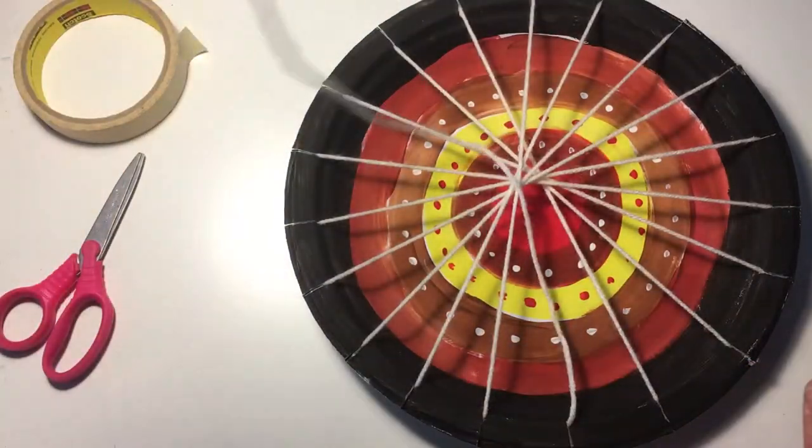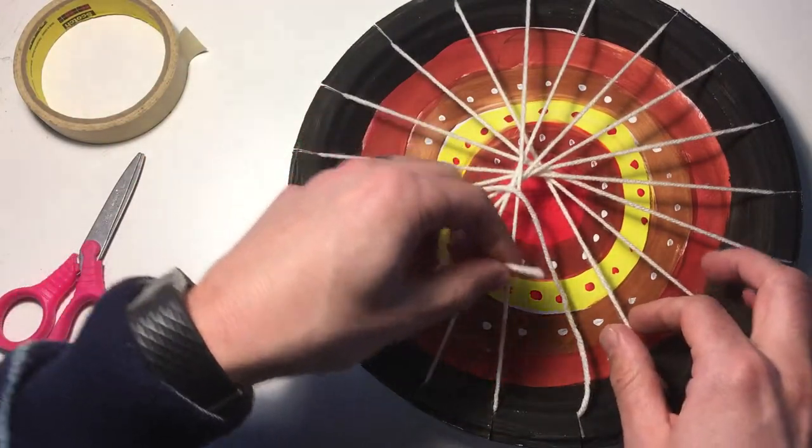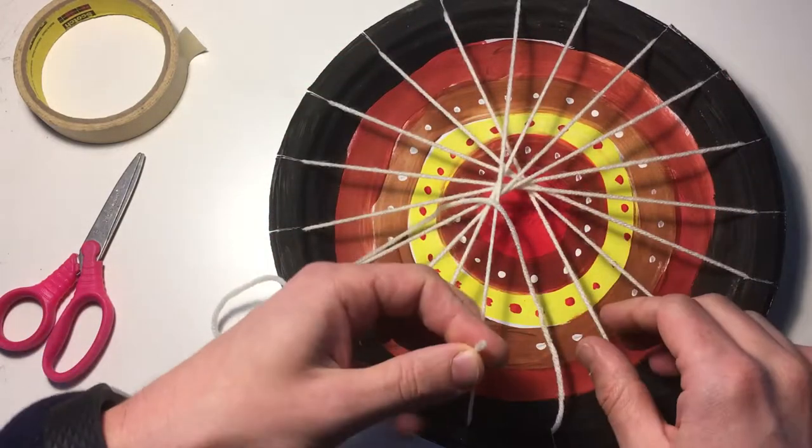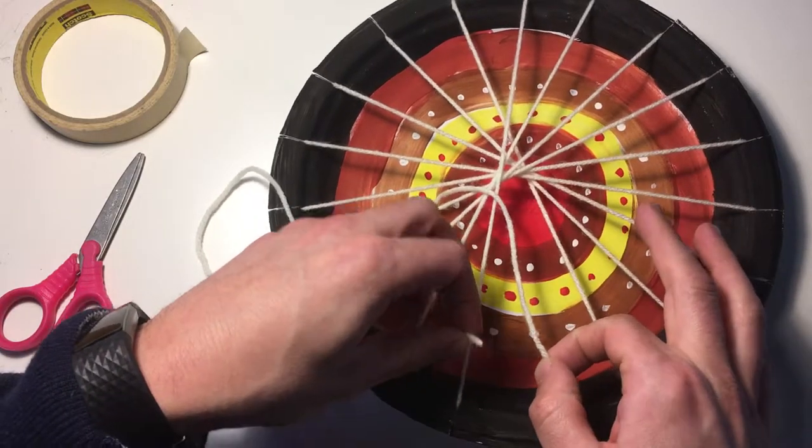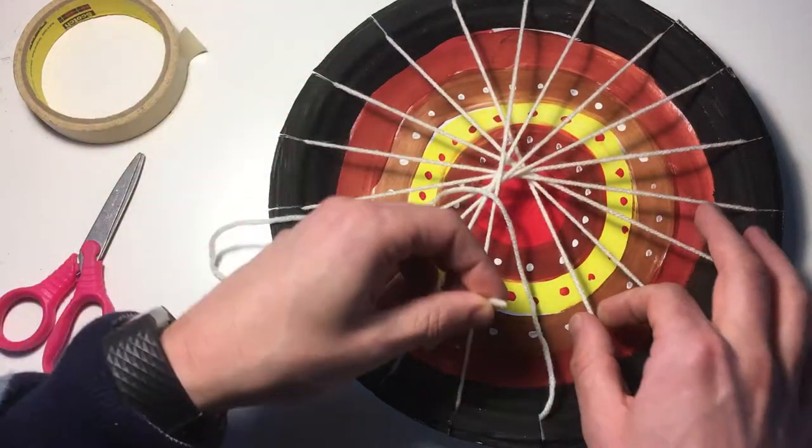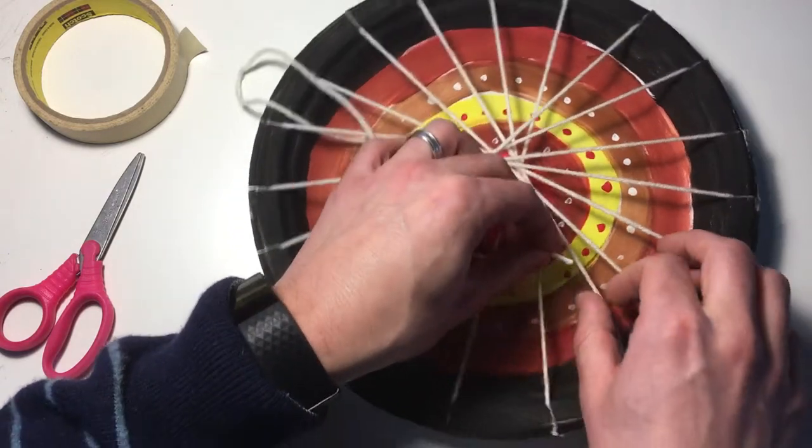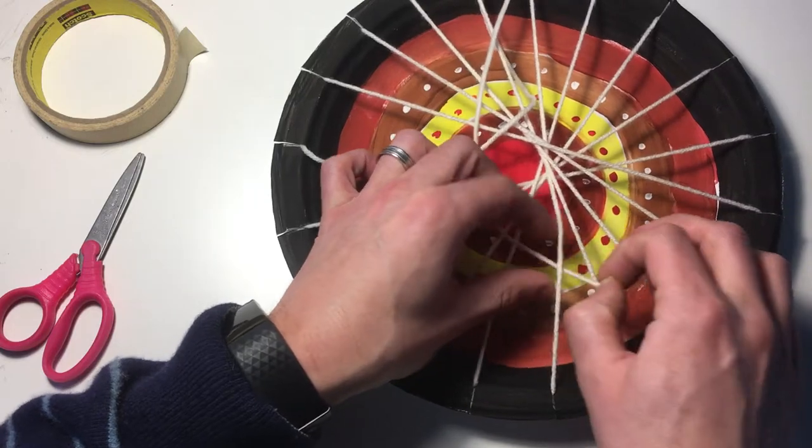So we've warped the loom and now it's time to weave. It's just like before with a rectangular or square weaving - we're going to go under over. But now we take the warp string and the weft string. So I'm going to go under this one, I'm going to go over, under, over, under.